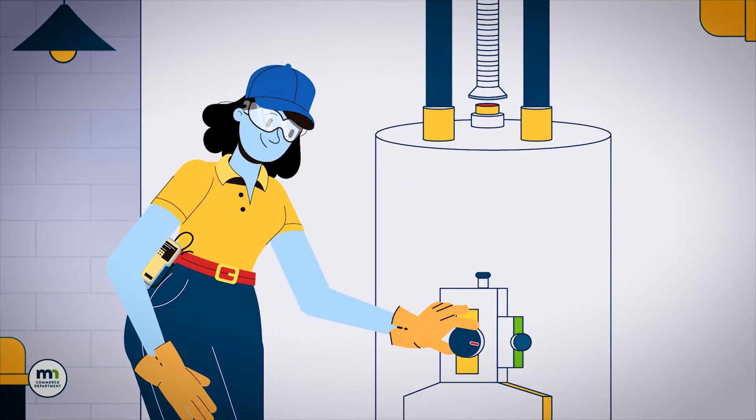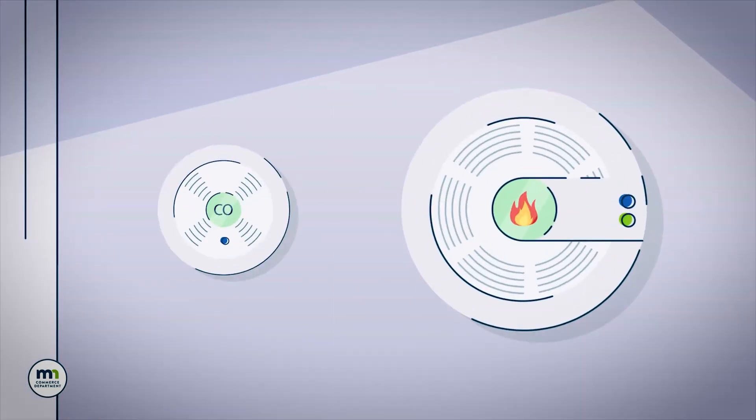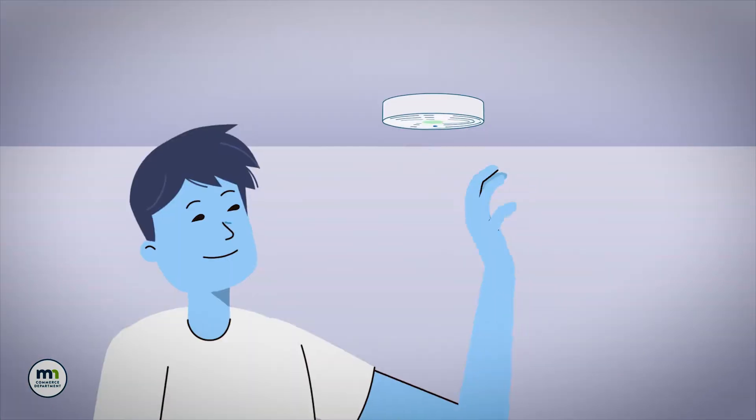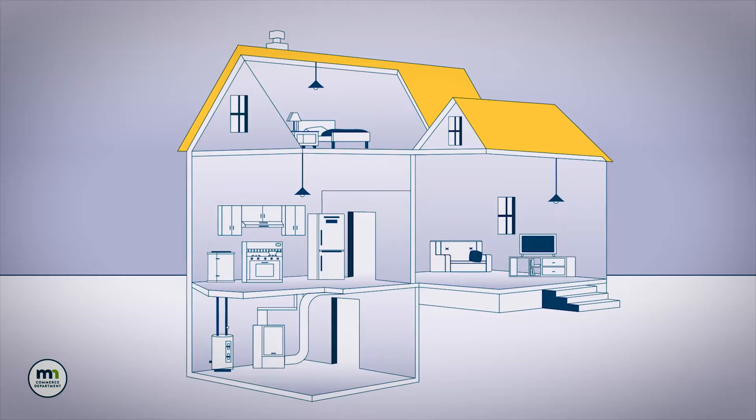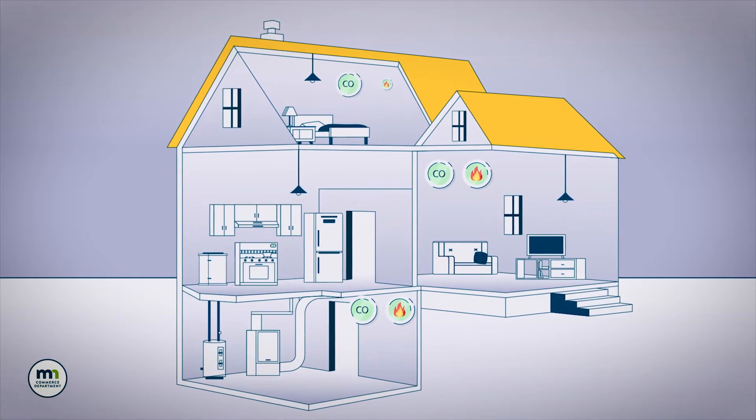But you can do a few things to keep your family safe, too. Test the carbon monoxide and smoke detectors twice a year, and replace their batteries every year. It is important to replace detectors every five years, or when recommended by the manufacturer.